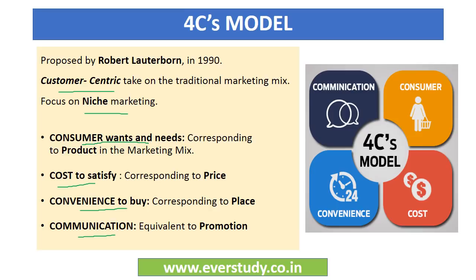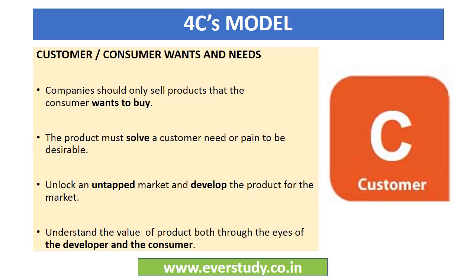First C is consumer wants and needs. Is model ke hisaab se, company ko wohi product sell karne chahiye jo customer lena chahata hai — that is what the customer wants to buy. Aur ye pata karne ke liye proper research karni chahiye ki customers ki wants and needs kya hain. Once this is clear, company should focus their efforts on attracting customers one by one with irresistible offers. The product should solve customers' needs and pain points, and to eliminate competition, it must be unique.